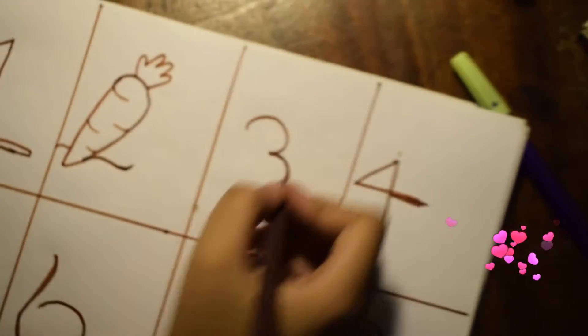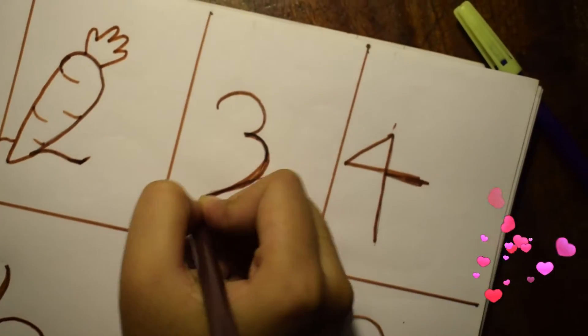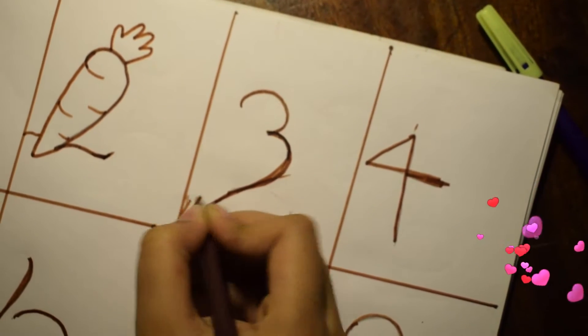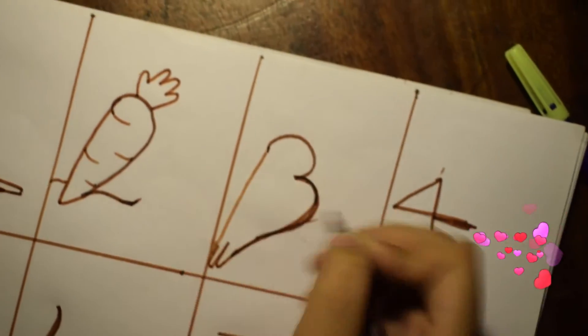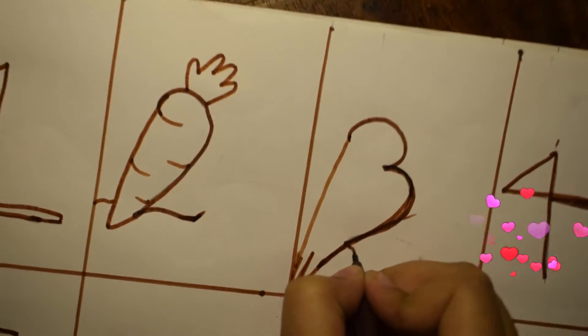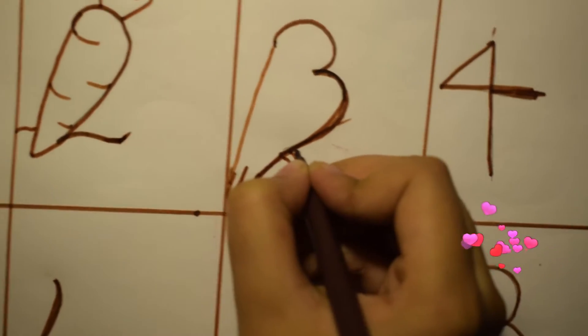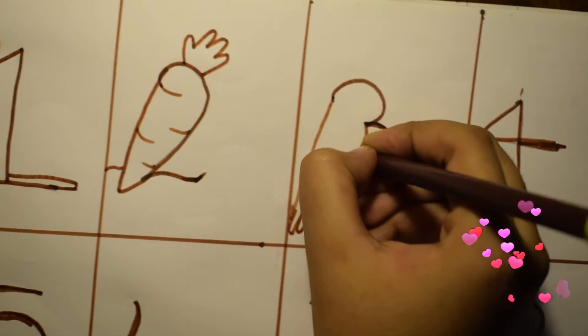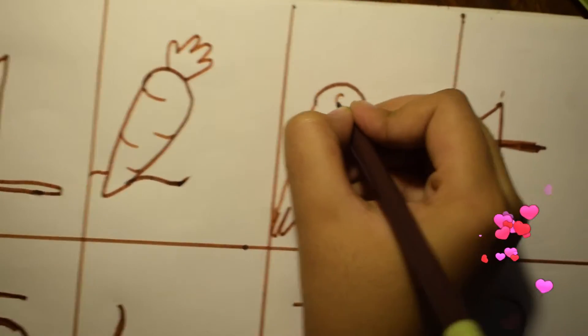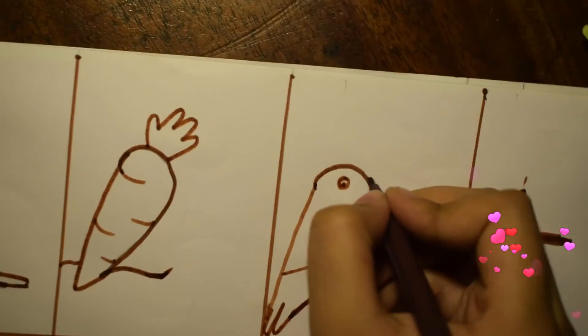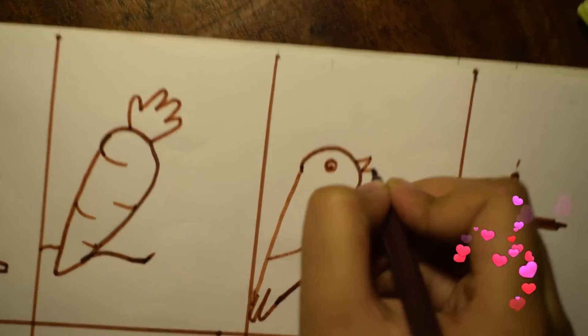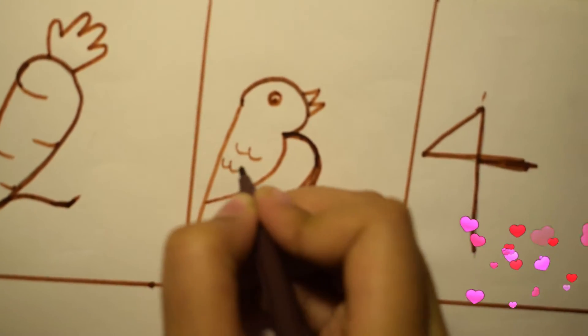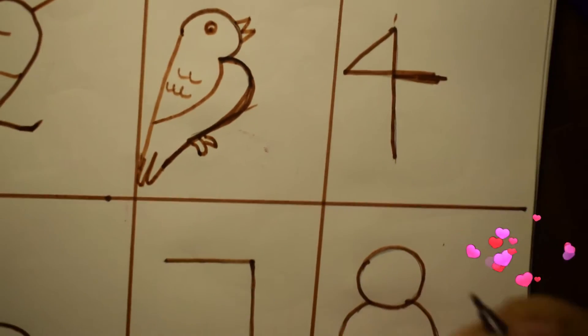Next is three. We'll turn this into a bird. Tiny legs. Yes. And of course, their wings. Then small eyes. Beak. Yes. And yes. Super. Our bird is ready.